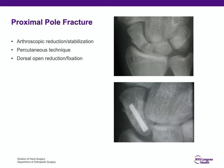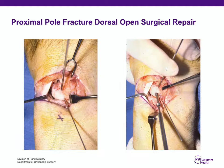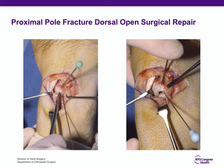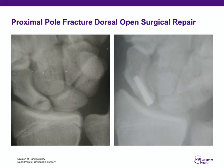For the proximal pole fracture — even non-displaced — I think the treatment is either open or arthroscopic reduction and stabilization with screw fixation, as seen here. I generally do it through a dorsal approach; sometimes a guide wire is put into the scaphoid to maintain it in a reduced position if it's unstable. Then the screw is placed adjacent to the guide wire, as seen in this example of guide wire placement, drilling, and screw fixation of a proximal pole scaphoid fracture.